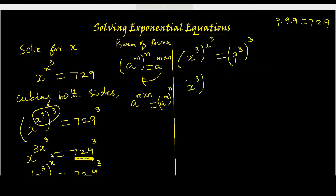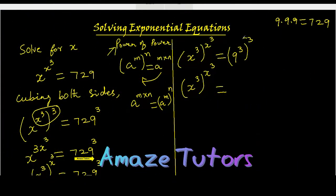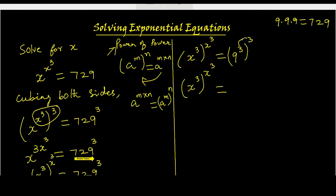So simplify the right side. X cubed to the power x cubed equals, applying the same power of power rule, 3 times 3 is 9, because we will multiply the powers when it is with the same base. 9 raised to, 3 times 3 is 9. Now as you clearly see, the right side also has the base and the exponent the same.